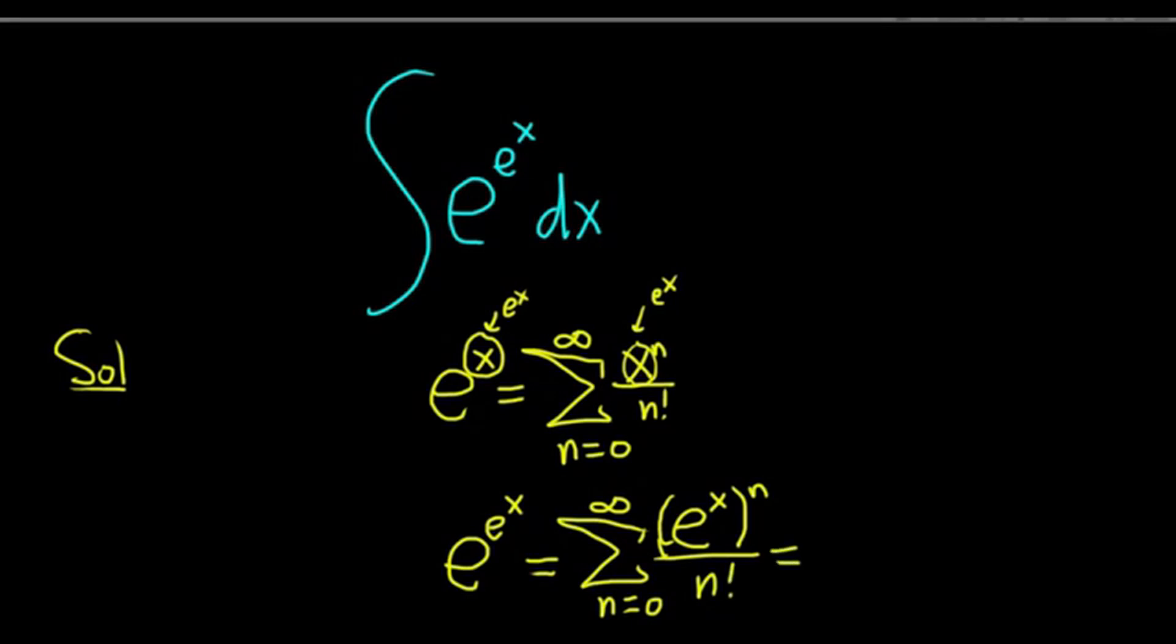This is equal to the infinite sum as n goes from 0 to infinity. Now we just multiply the exponents. This is e to the nx over n factorial.